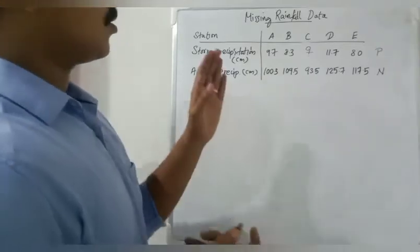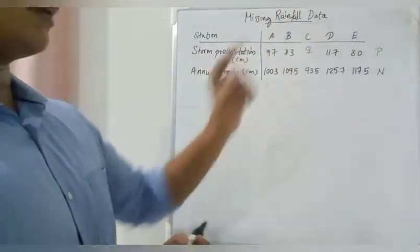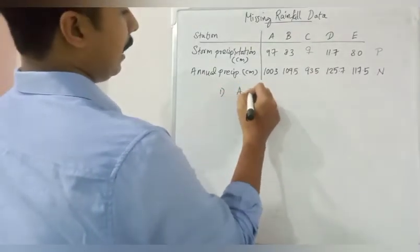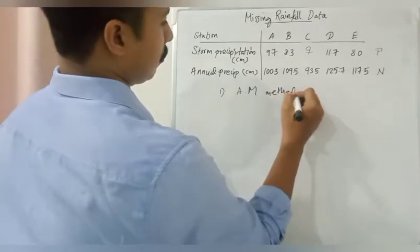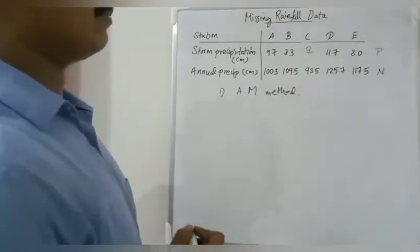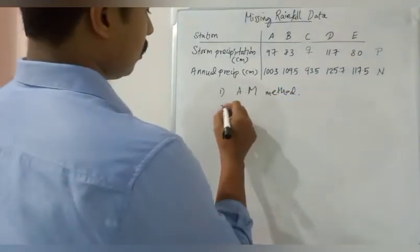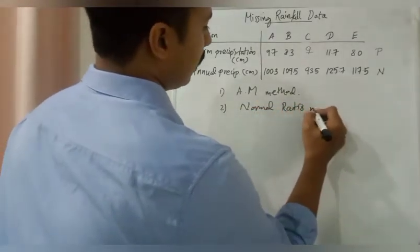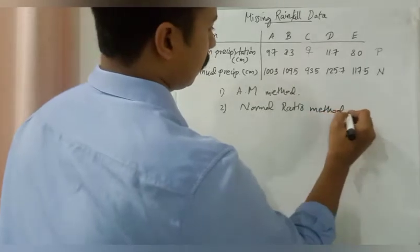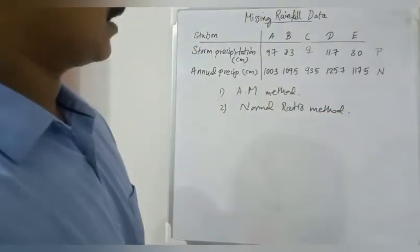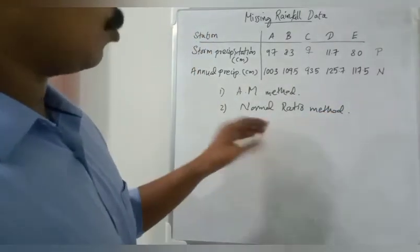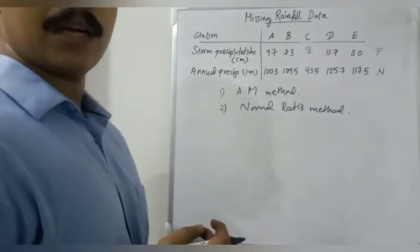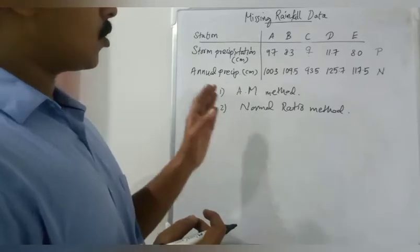So I think we can start the problem. To find the missing rainfall data we have two methods. First method is arithmetic mean method and second one is normal ratio method.